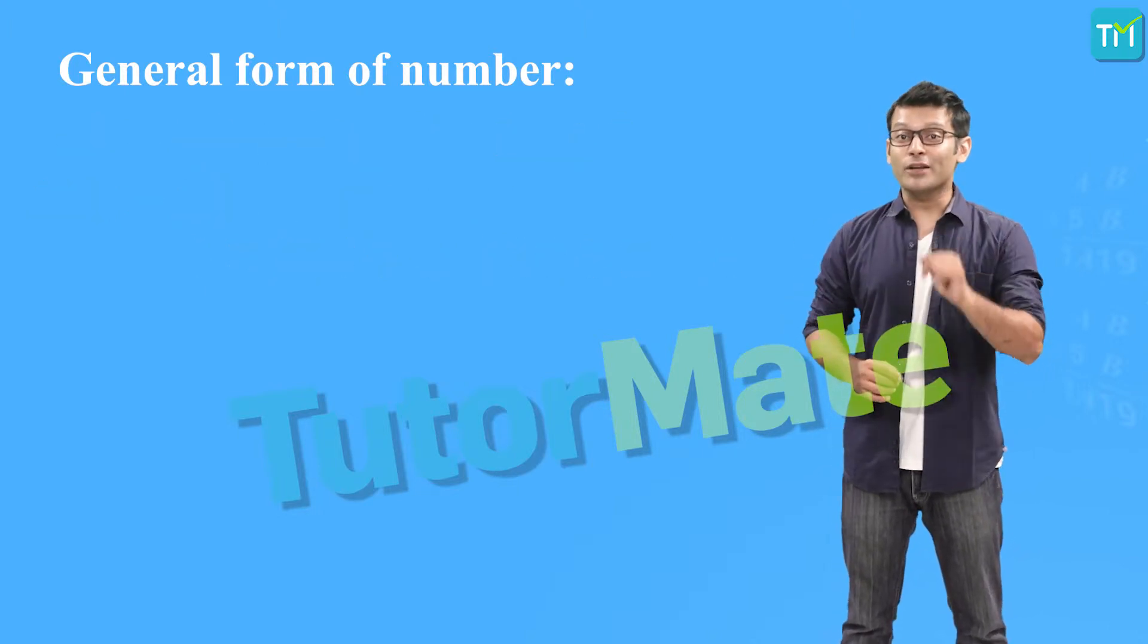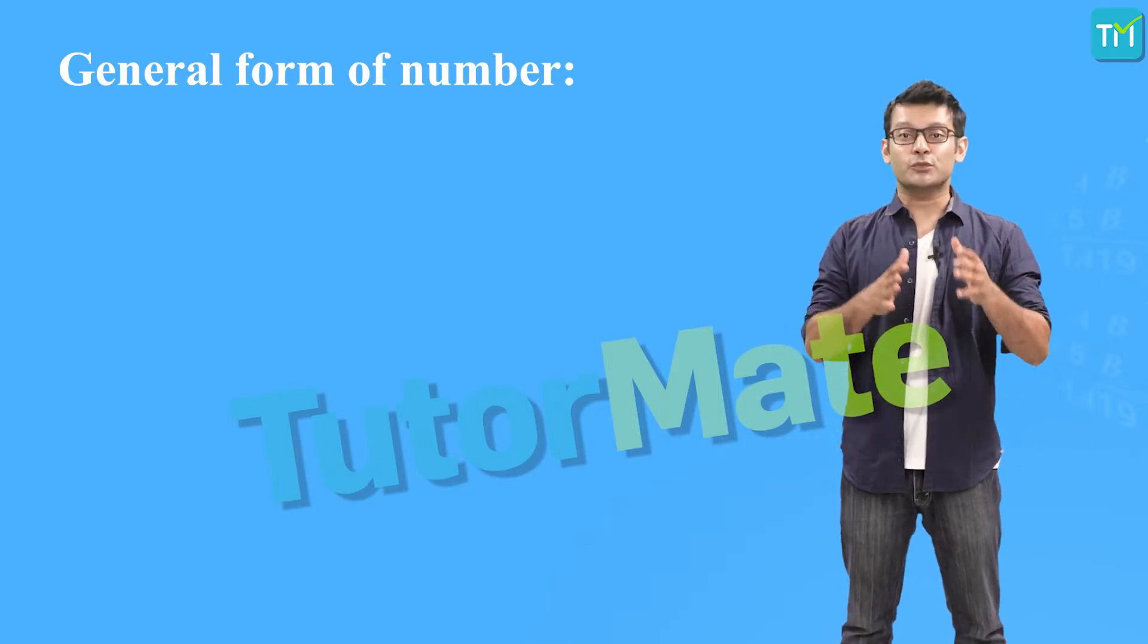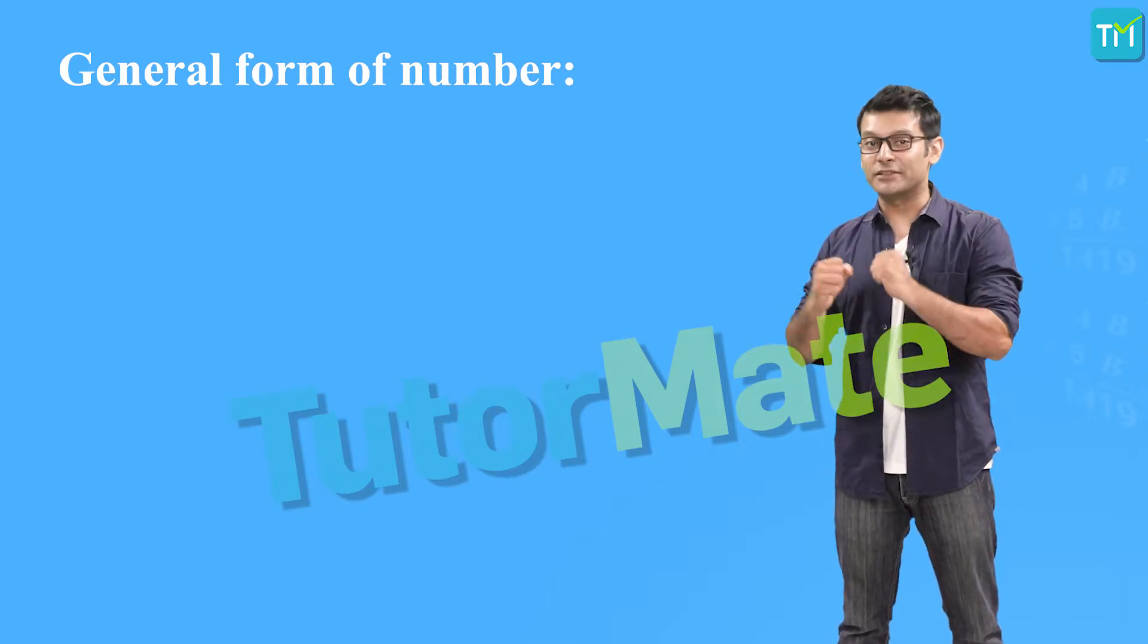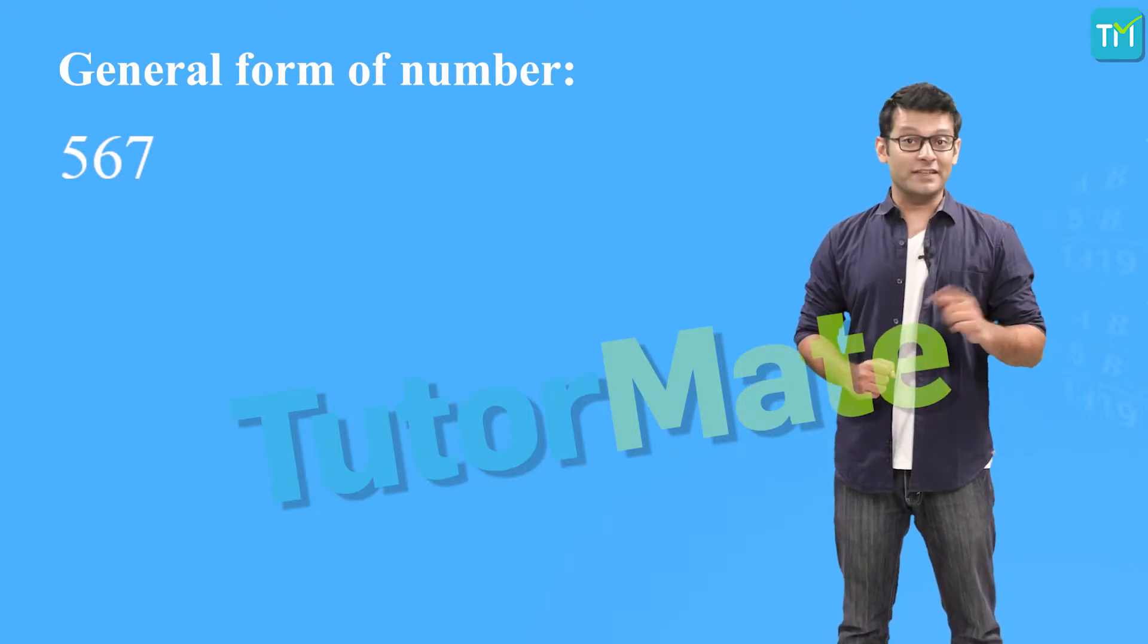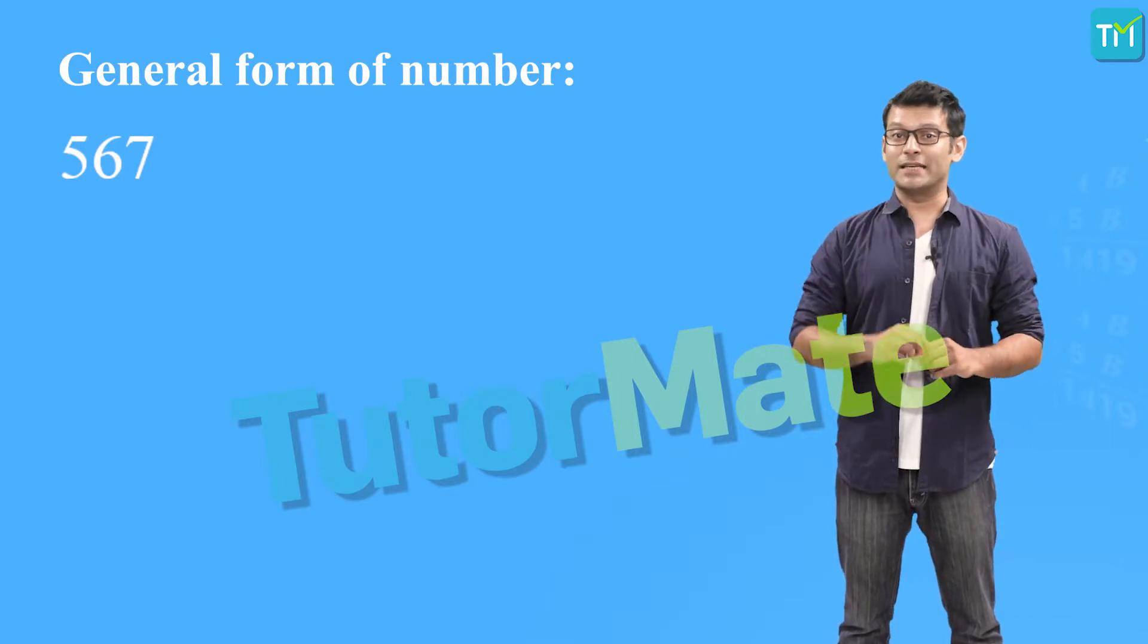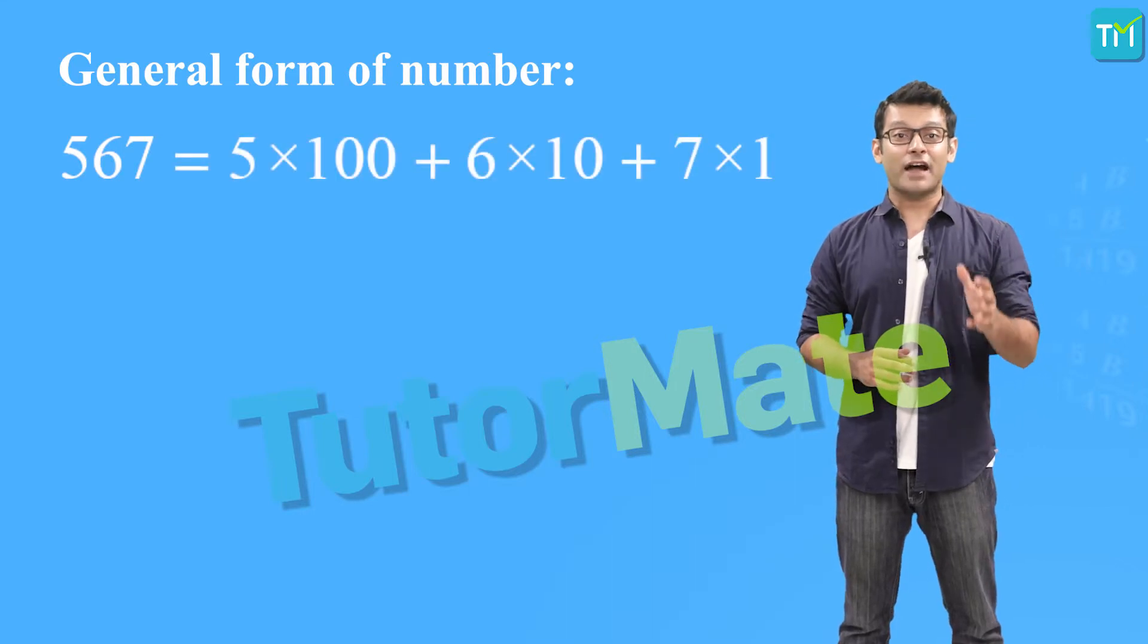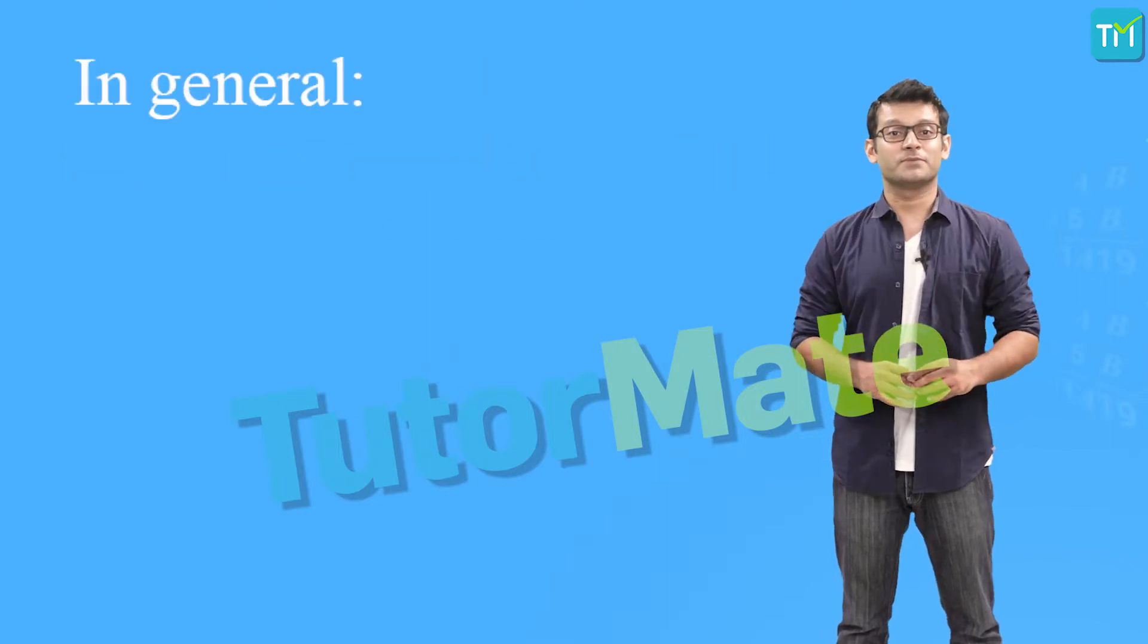So, while writing the number in its general form, we multiply the individual digits with their place values and then add them together. If we consider the number 567, then 5 is at the hundreds place, 6 is at the tens place and 7 is at the ones place. In this case, the number can be expressed as 5 into 100 plus 6 into 10 plus 7 into 1.